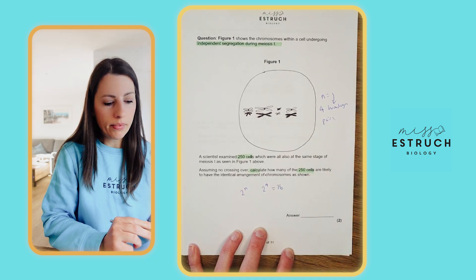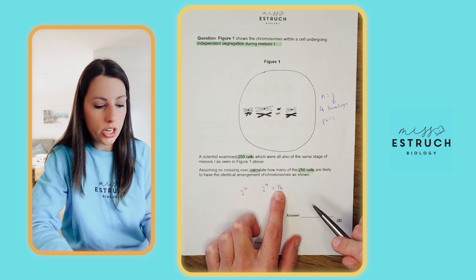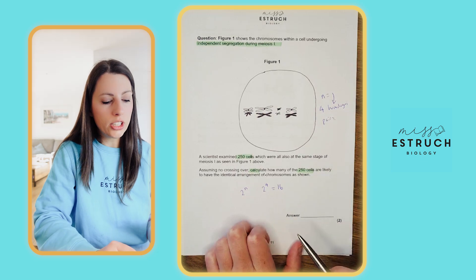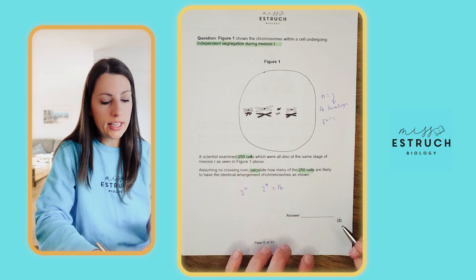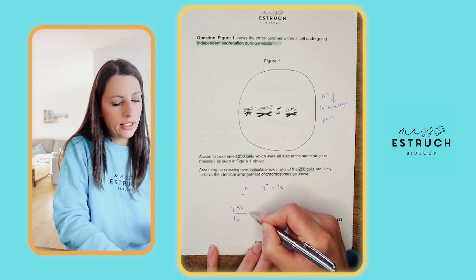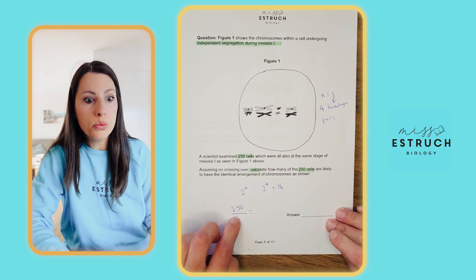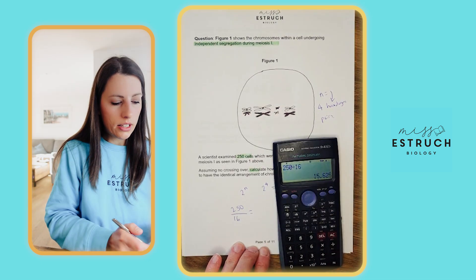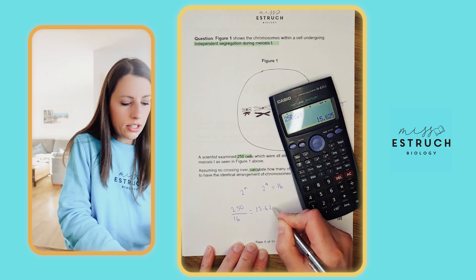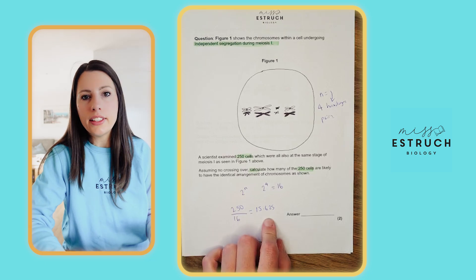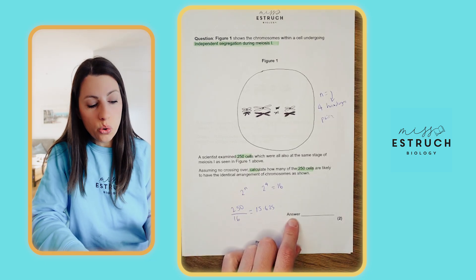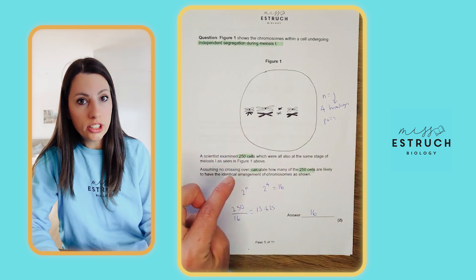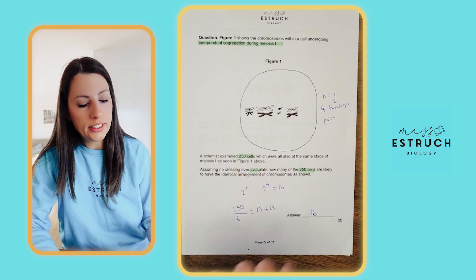The hint is independent segregation. There are four homologous pairs shown. The formula for possible combinations of alignment at the equator is 2 to the power of n, where n equals the number of homologous pairs. So 2 to the power of 4 equals 16 possible combinations. Divide 250 by 16 to get how many cells match that arrangement: 250 ÷ 16 = 15.625, so accept 15 or 16 — I'll round up to 16.